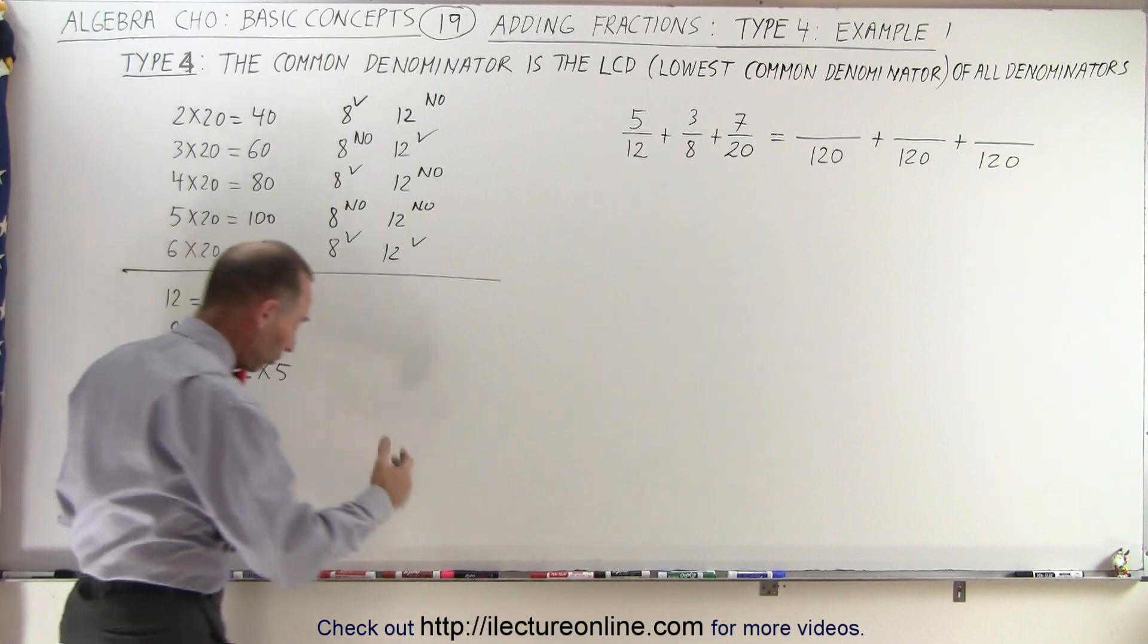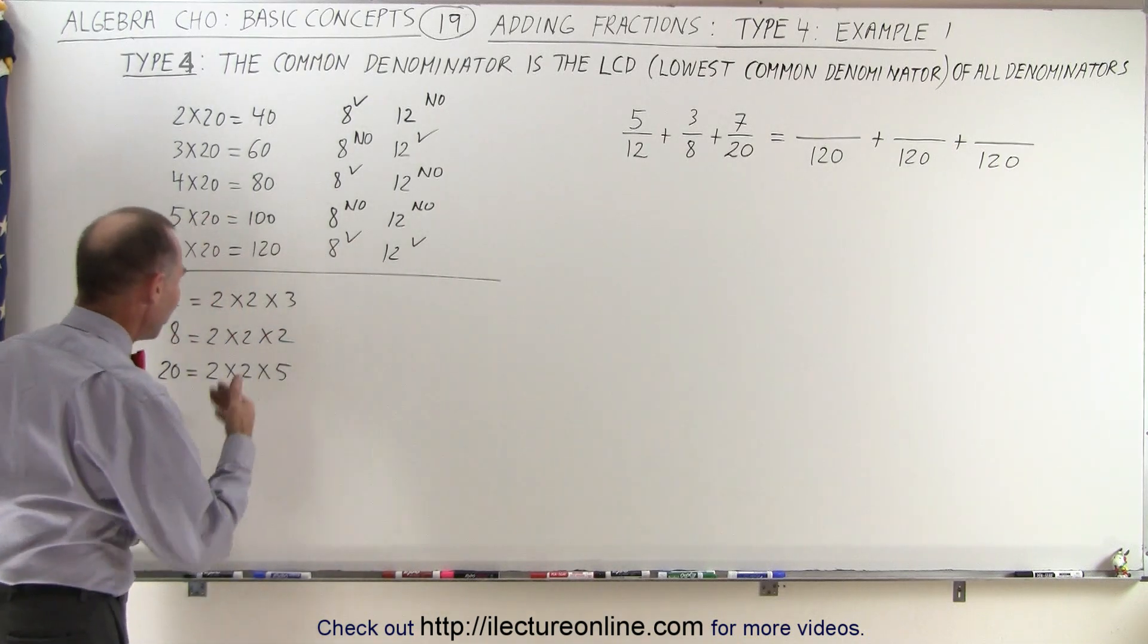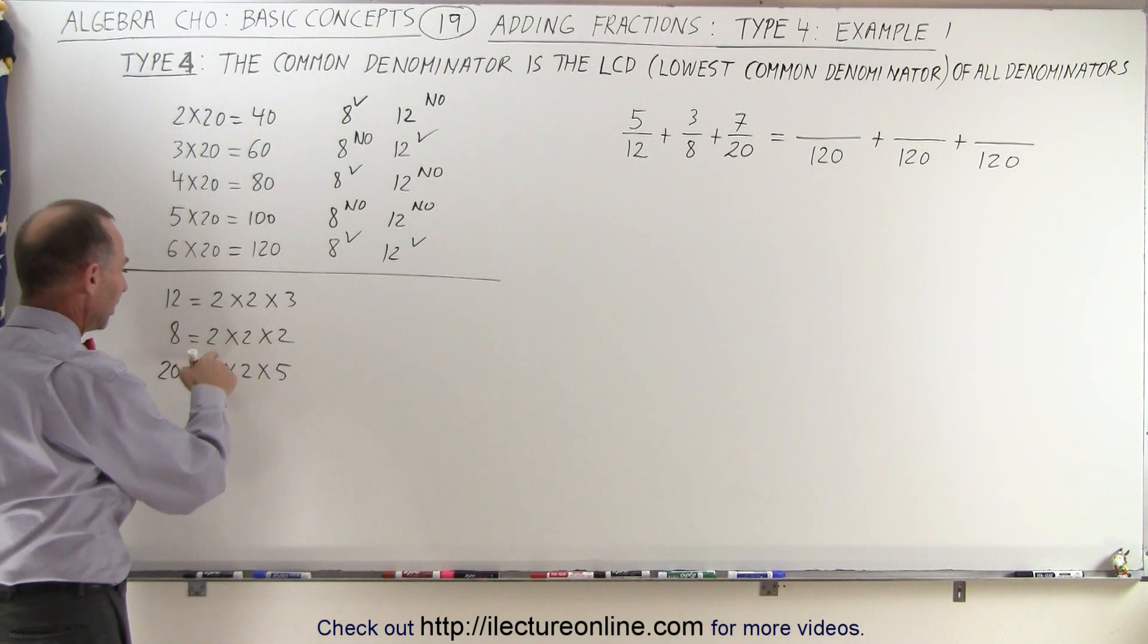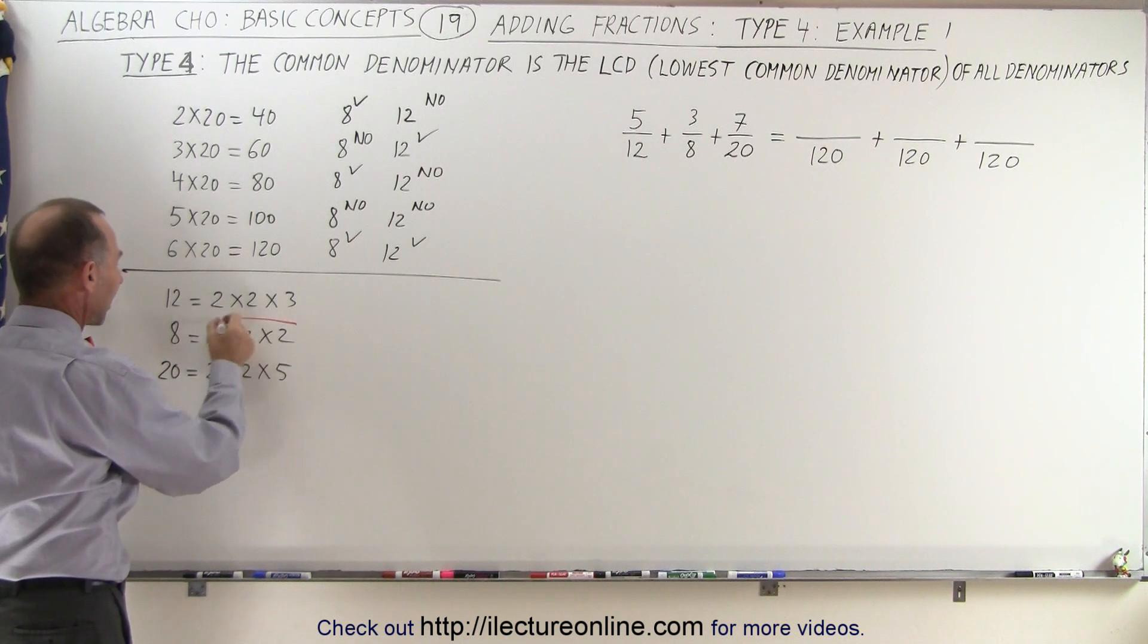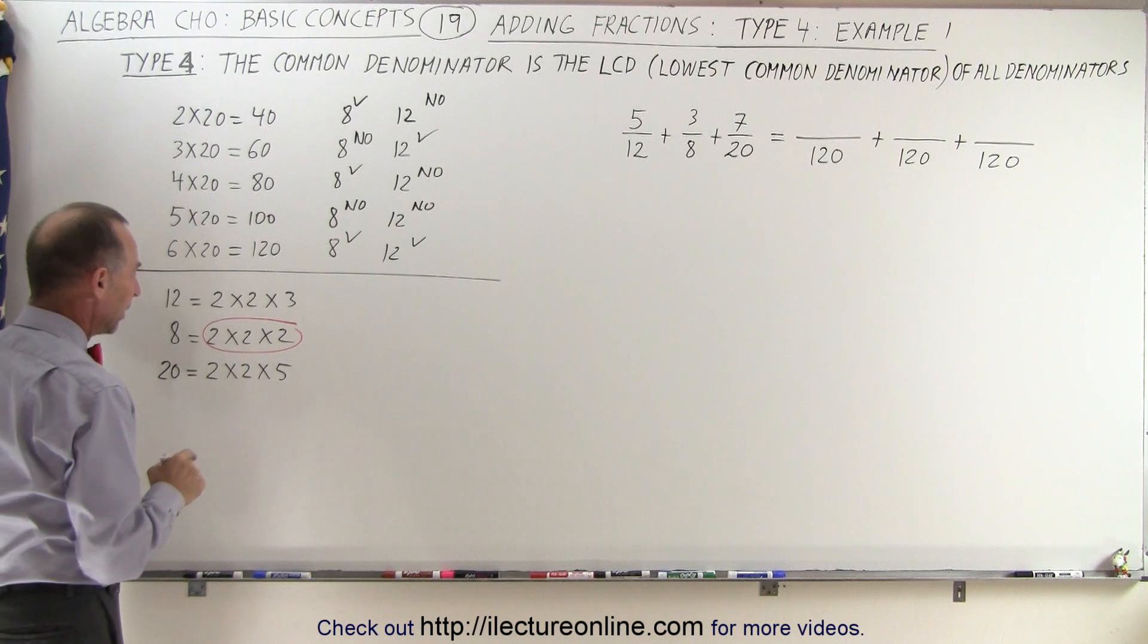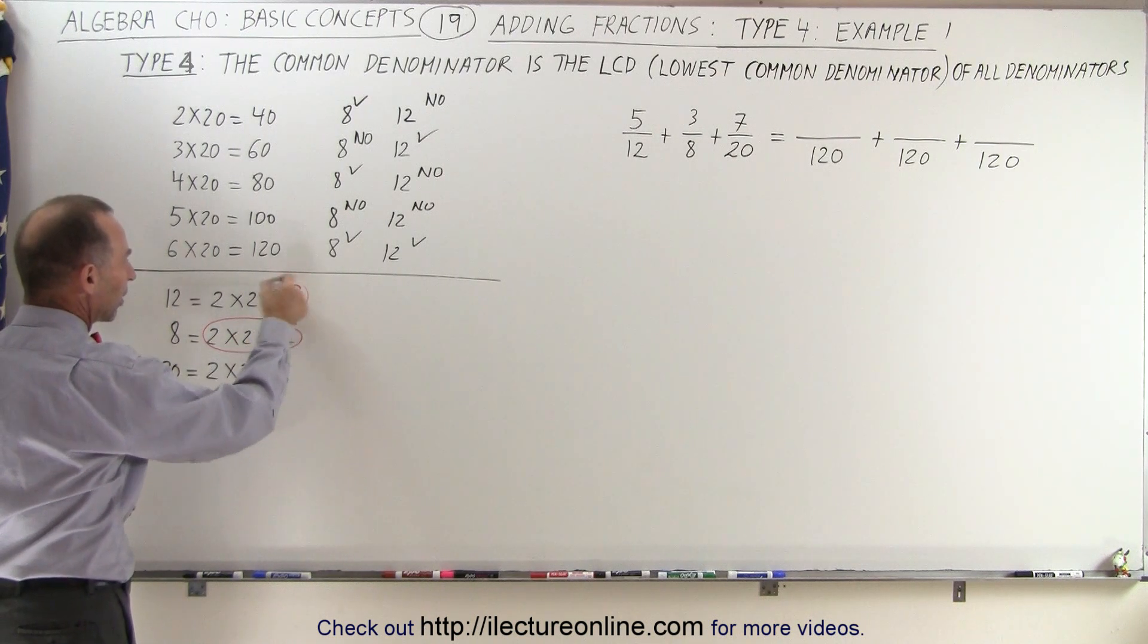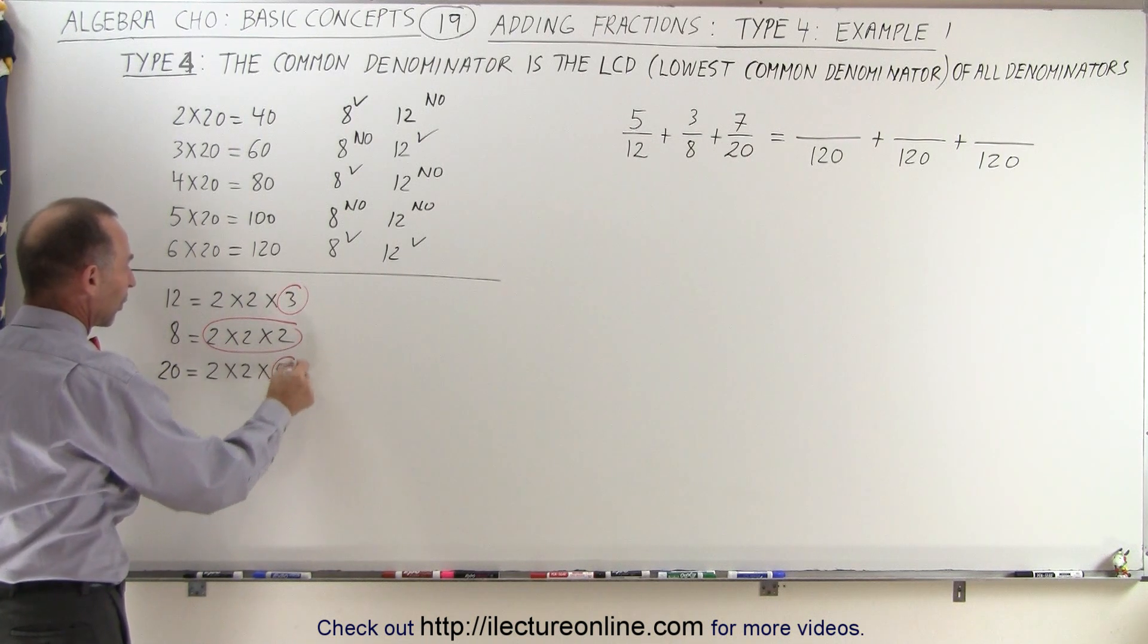So now we're going to circle whatever factor occurs the most for any one number. So we see that factor 2 occurs 3 times here, twice here and twice there, but 3 times there. The factor 3 occurs once here, and the factor 5 occurs once there,